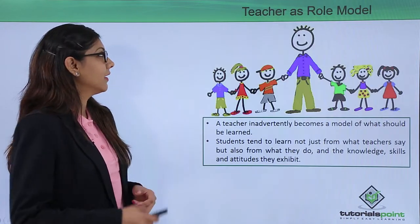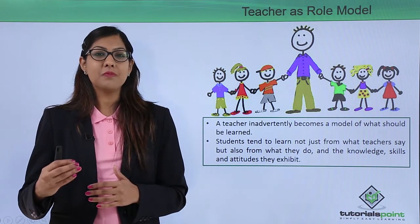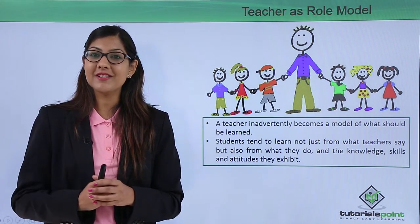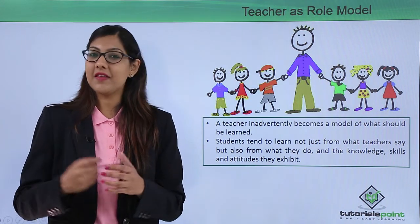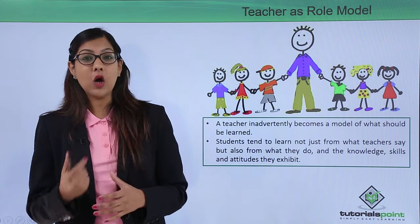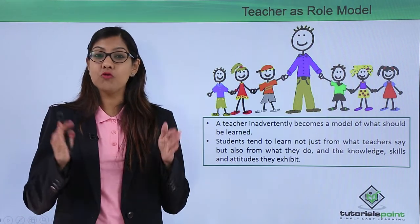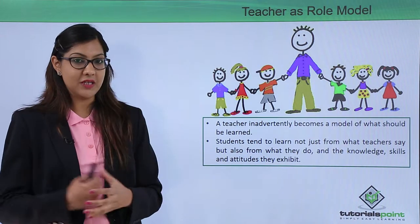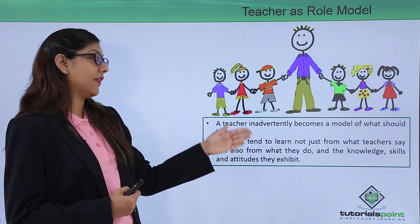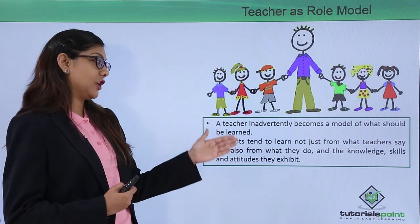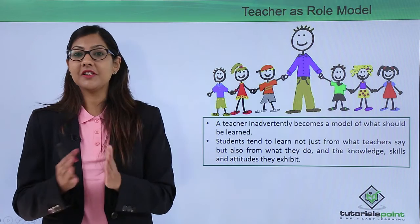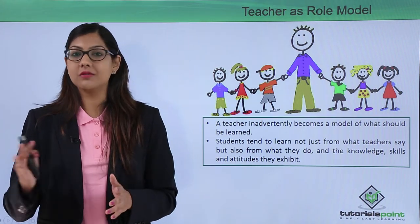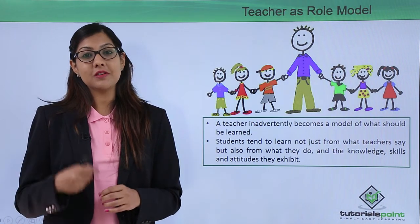As a role model, all of us look up to our teachers just as a child looks up to a parent and copies what they do. A student also looks up to the teacher and copies their behavior, so the teacher needs to walk the talk. A teacher inadvertently becomes a model for what has to be learned — students learn not just what the teacher says, but also from what they do, the knowledge, skills, attributes, and attitudes they exhibit.